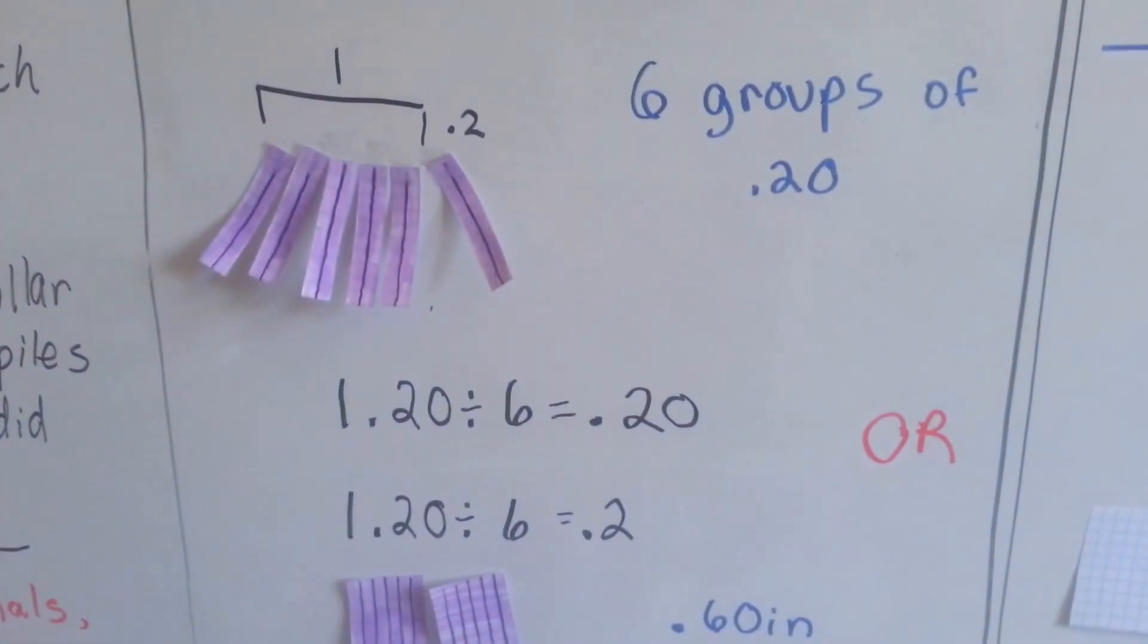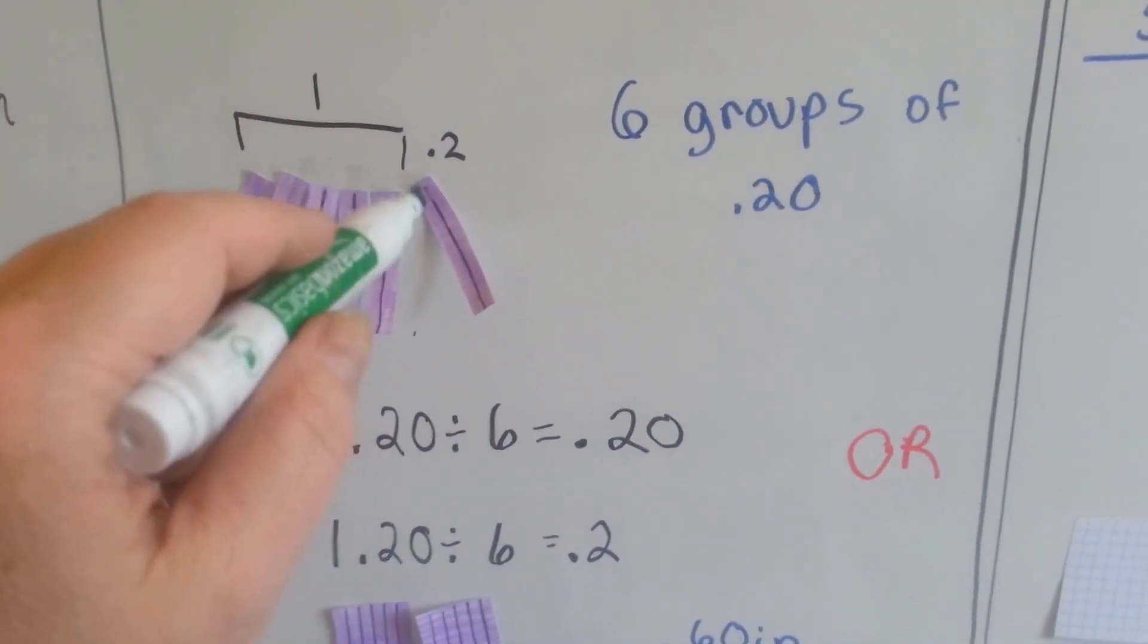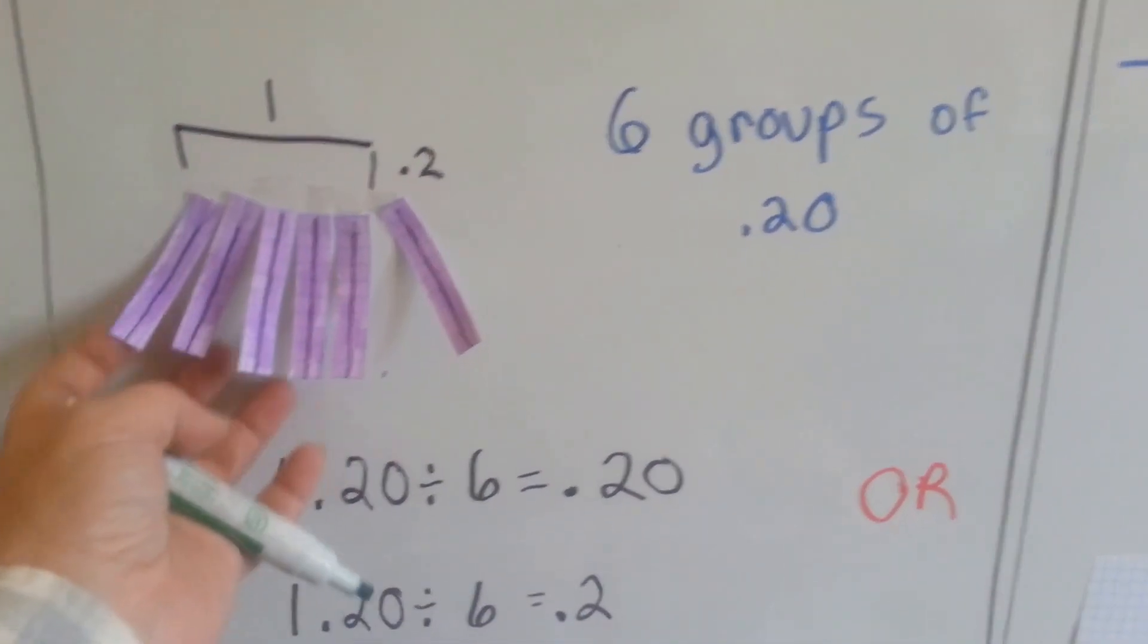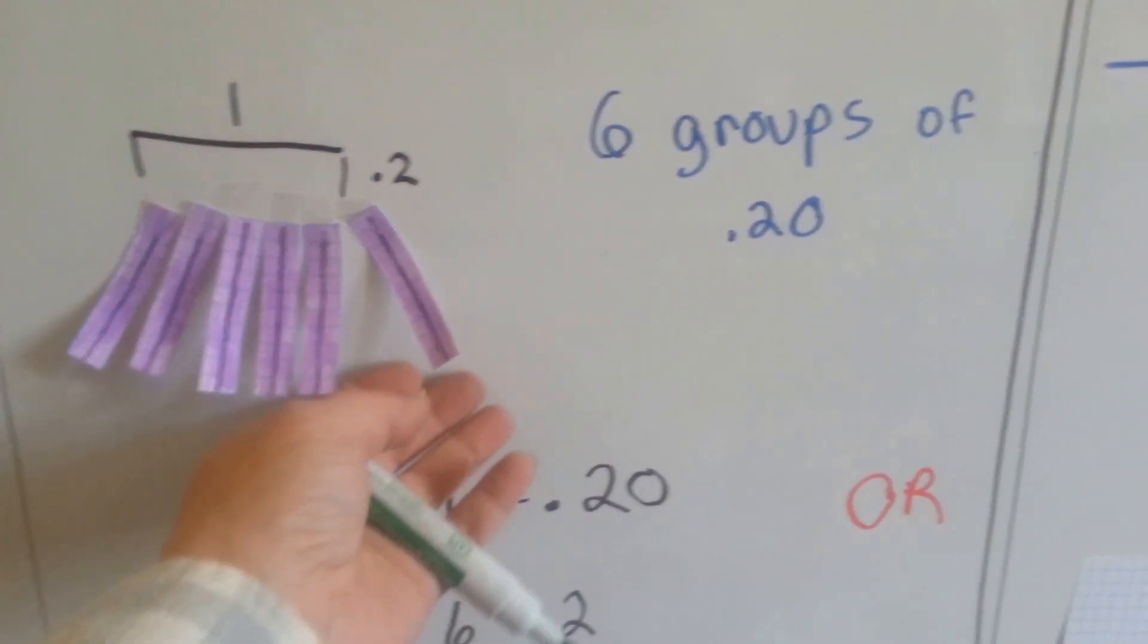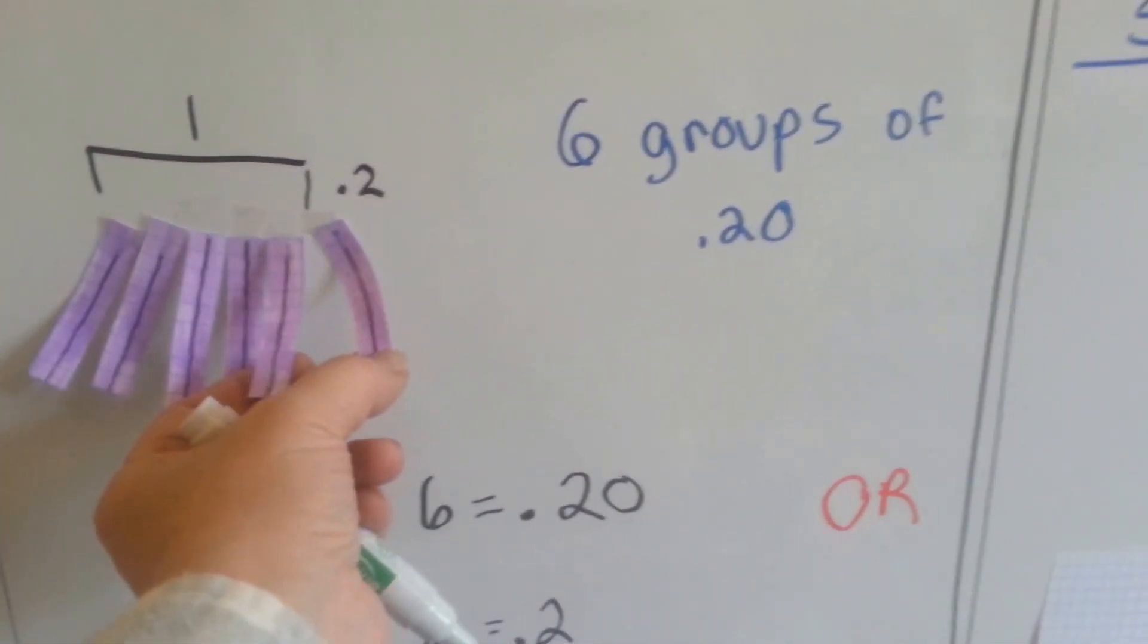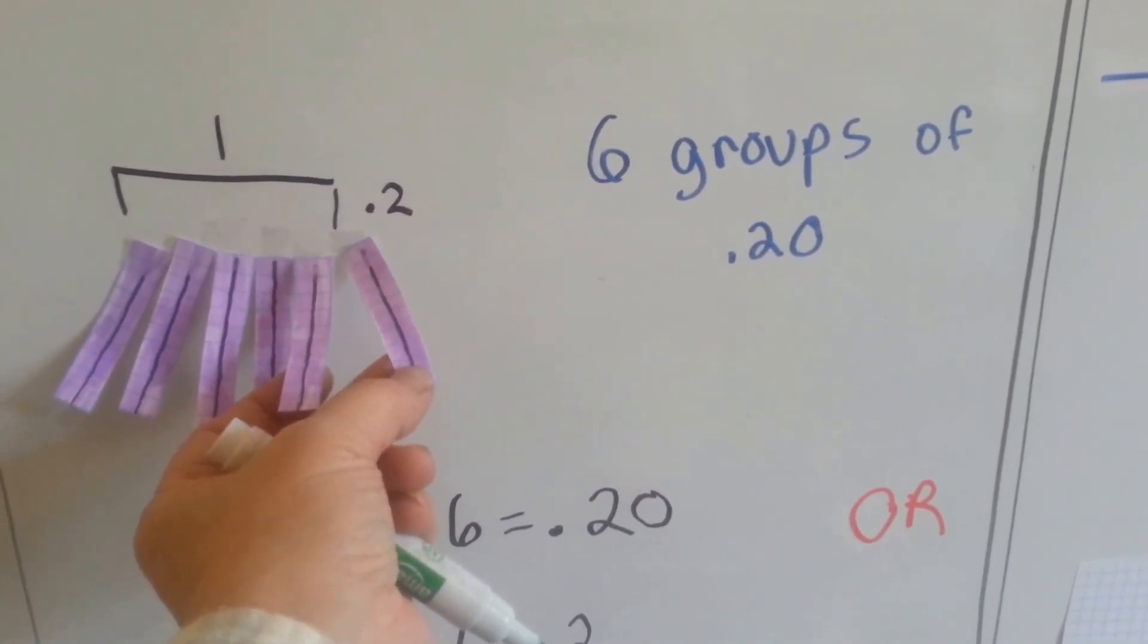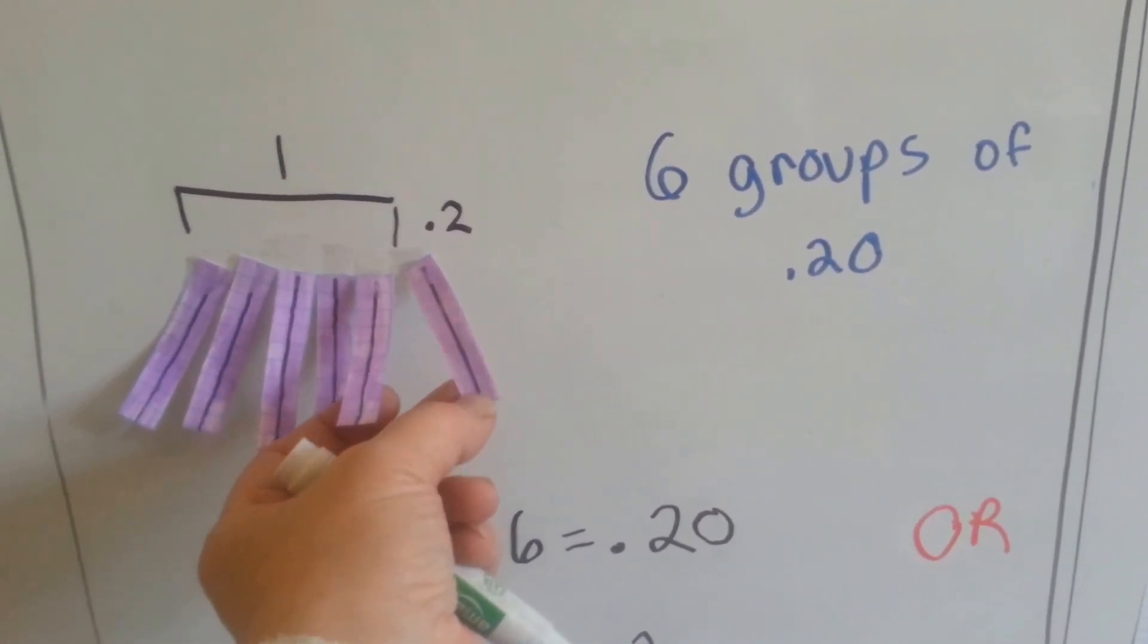How about here? We've got one full card, and then that made five of them, and then the sixth one is the last 0.2, the 20 hundredths or two tenths, see?